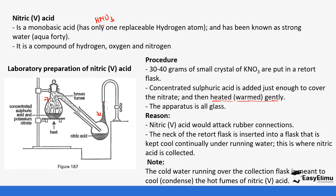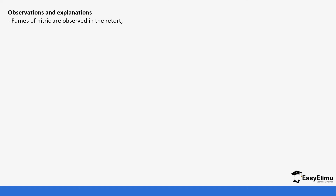The cold water running over the collection flask is meant to condense the hot fumes of nitric acid. One of the observations we note from the reaction is that fumes of nitric acid are usually observed. The reaction is a displacement: potassium nitrate plus sulfuric acid forms potassium hydrogen sulfate and nitric acid.